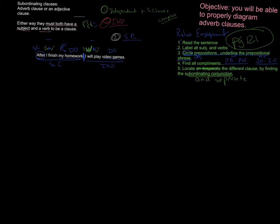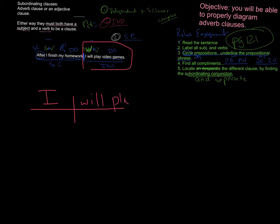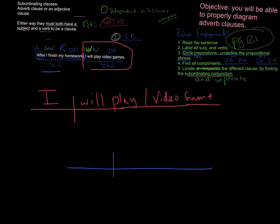Now we've already talked about diagramming. The first thing I want to do is diagram the independent clause: 'I will play video games.' We start with a horizontal line, split it in half with a vertical line, and put our subject on the left side — 'I.' Then our verb phrase 'will play' goes on the right, because the helping verb goes with the main verb. Now we have a direct object, so we do the straight line up, and put 'video games.' My independent clause is done. Now I go ahead and do my subordinating clause, working through 'I finish my homework.'